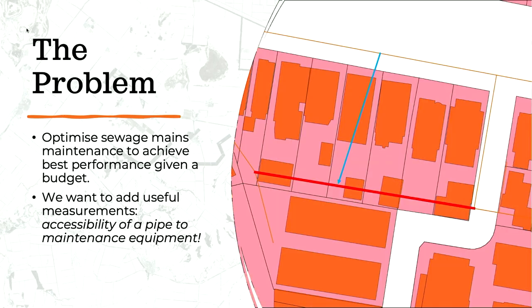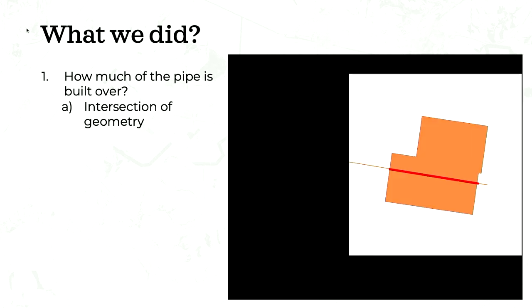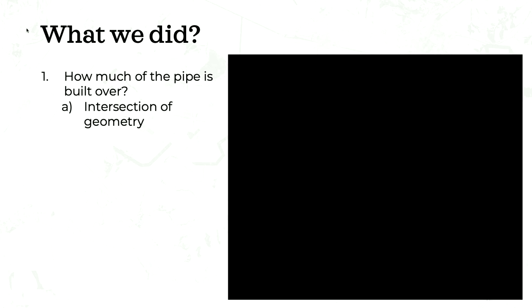To solve the first measure — how much of a pipe is built over — the algorithm is relatively simple. If you want to find how much of a pipe is built over, you just find the exact section of the pipe that is underneath any other geometry. This is a geometry intersection problem. In Shapely, you can do that with a single API call — the intersection API. Any geometry has an intersection method that can be called on a larger geometry, and Shapely handles the specific algorithms to intersect a line with a line or a line with a polygon.